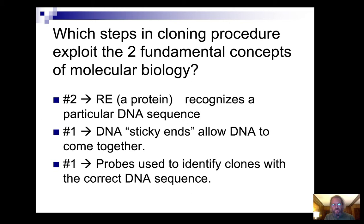The donor DNA and the vector DNA are cut with the same restriction enzymes, so you end up having complementary base pair opportunities. In addition, when you're doing cloning you may be searching through the entire genome to find particular sequences, so probes are used to identify specific sequences — exemplifying base pair rules, concept number one again.